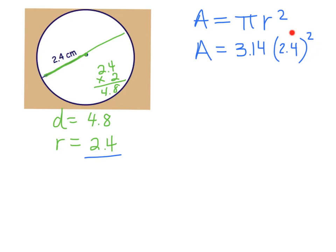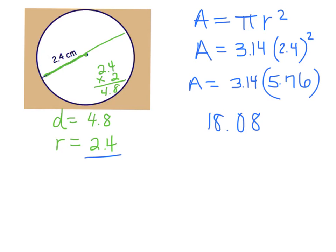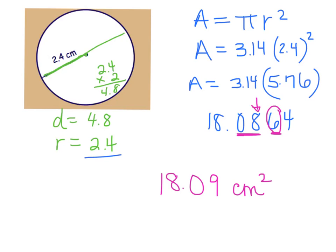When you grab your calculator, you need to do the square part first — always do your exponent first. So do 2.4 times 2.4, and I get 5.76. Now multiply that by pi, or 3.14, and I'll have my area. Typing in 5.76 times 3.14 gives 18.0864. For the final answer, let's round to the nearest hundredth. The hundredths place is the second decimal spot. Looking at the third decimal to decide rounding — it's a 6, which is 5 or higher, so I round up. My final answer is 18.09 centimeters squared.